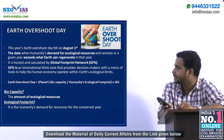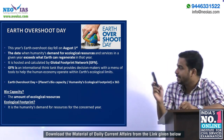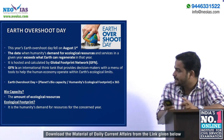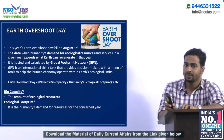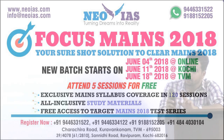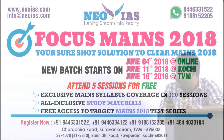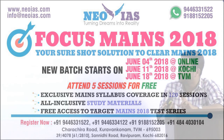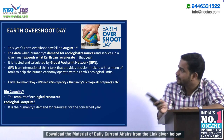Planet's bio capacity means the amount of ecological resources the Earth can regenerate. Ecological footprint means humanity's demand for resources and services from the ecosystem or environment for the concerned year. These are the two key terms in the Earth Overshoot Day equation.